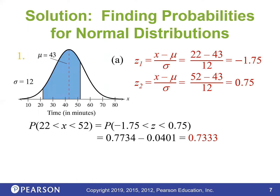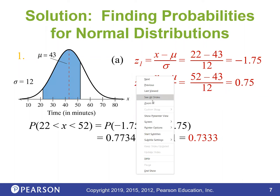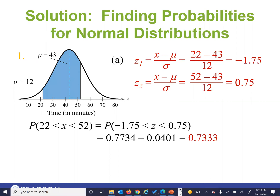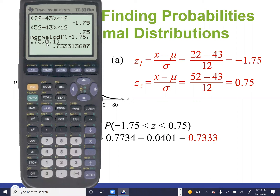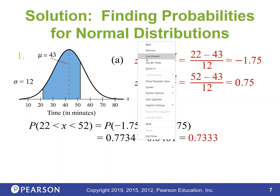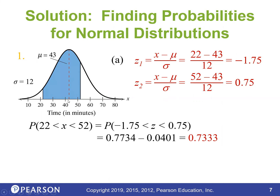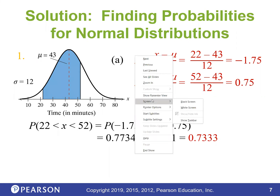Now your turn: find the probability that a shopper is in the store for more than 37 minutes, and how many out of 200 shoppers would shop for more than 37 minutes. We only need one Z-score this time because we just want a minimum value with everything going off to the right. The Z-score for 37 minutes: Z = (37 − 43) / 12 = −0.5.